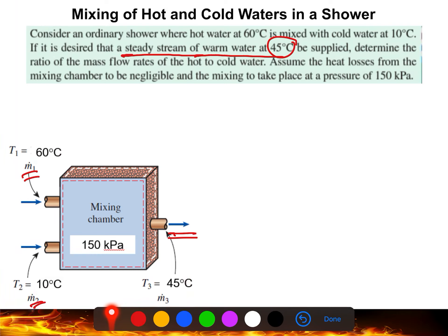So we have 60°C hot water and 10°C cold water mixing to give 45°C outlet water. We need to find the ratio of hot to cold mass flow rate. The heat loss from the mixing chamber is assumed negligible, and mixing takes place at a pressure of 150 kPa.